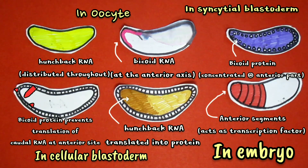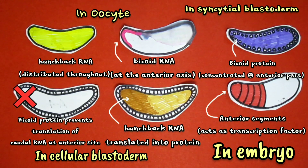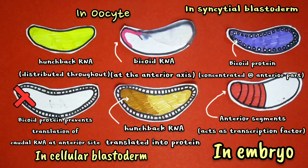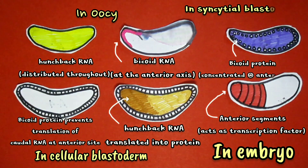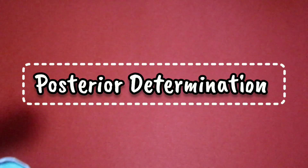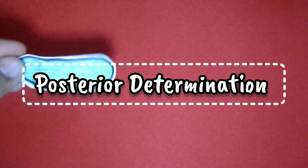After fertilization, each type of RNA is translated locally and the resulting protein products diffuse through the embryo to form concentration gradients. Bicoid protein is concentrated at the anterior end and nanos protein is concentrated at the posterior end.